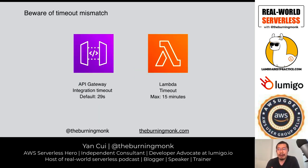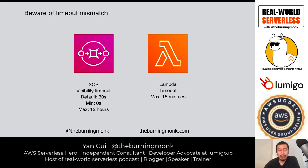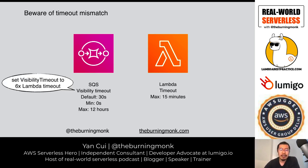For example, API Gateway has a 29-second integration timeout, but a Lambda function can run for 15 minutes. If you configure your Lambda timeout to be greater than 29 seconds, API Gateway will time out the request after just 29 seconds even if the function is still running. SQS queues have a maximum 12-hour visibility timeout, and AWS recommends setting that to about six times your Lambda timeout.